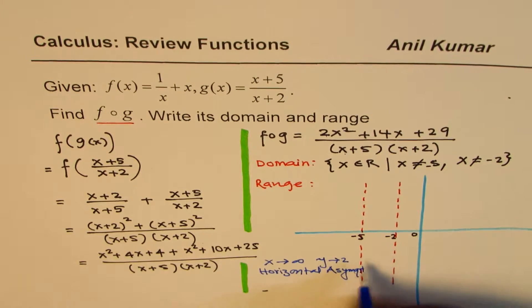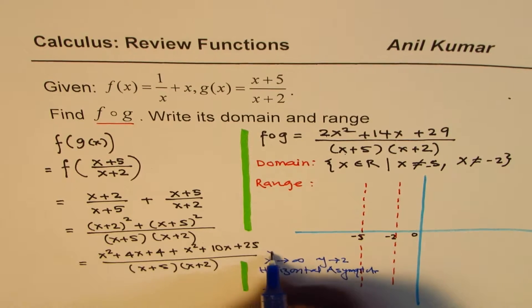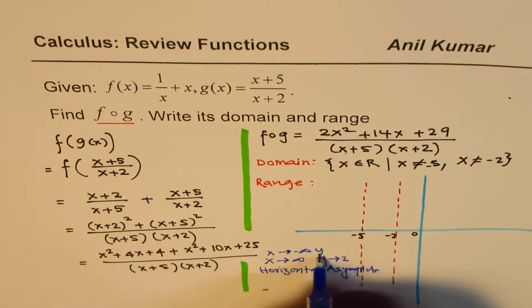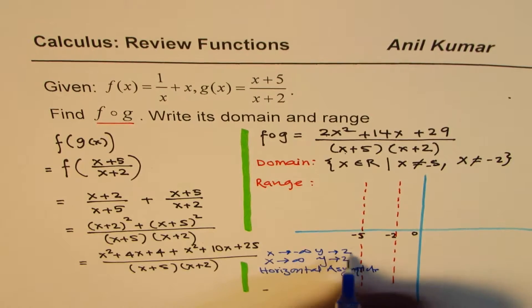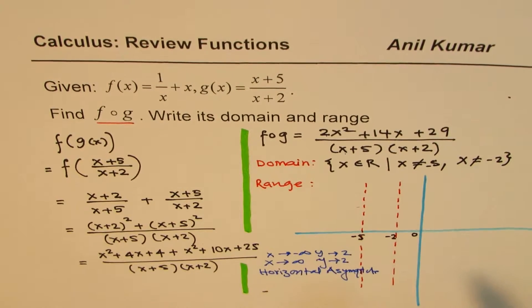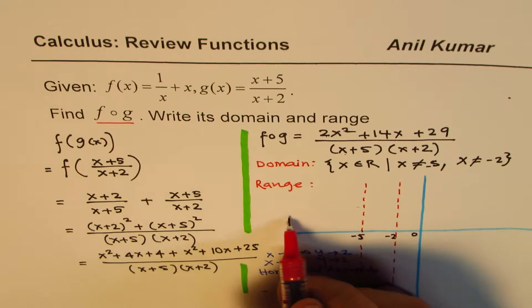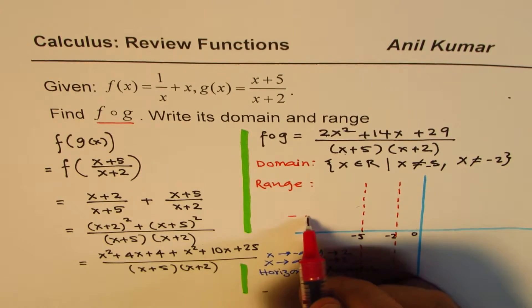Even when x approaches minus infinity, y will approach 2, since square will make it positive. So there is a horizontal asymptote at y equals to 2.